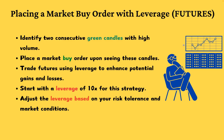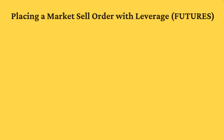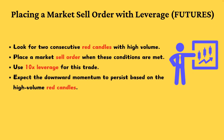Let's say the price of Bitcoin rose from $30,000 to $3,500 over the last two candles. If our volume conditions are met, we'll place a market buy order with 10x leverage, expecting the upward momentum to continue. Conversely, when we see two consecutive red candles with high volume, we place a market sell order with 10x leverage, anticipating the downward momentum to continue.